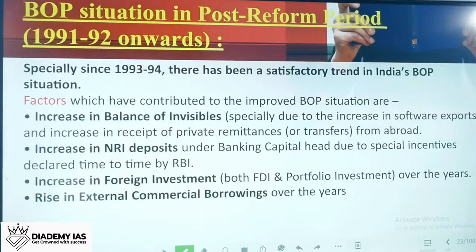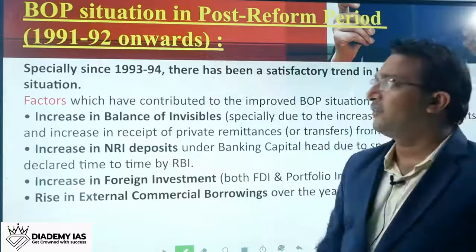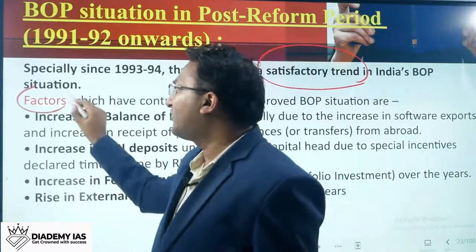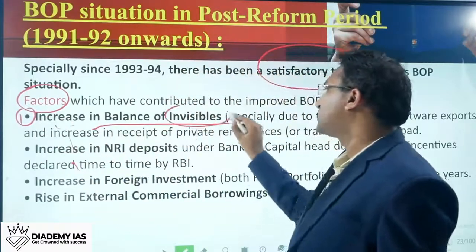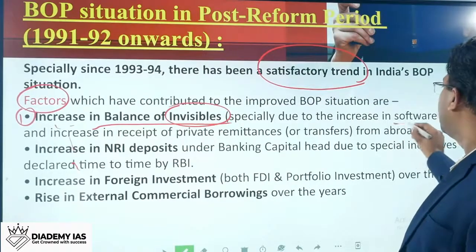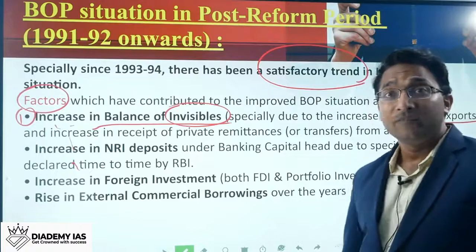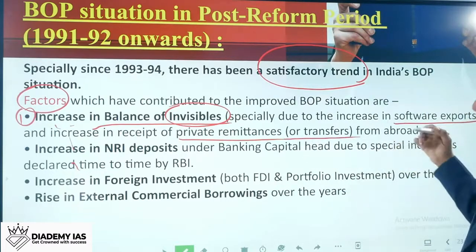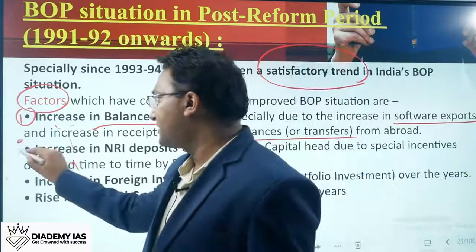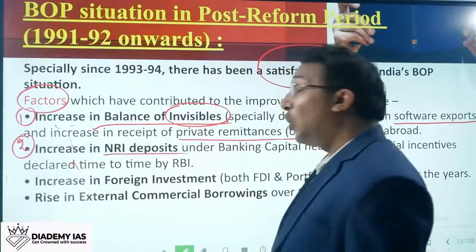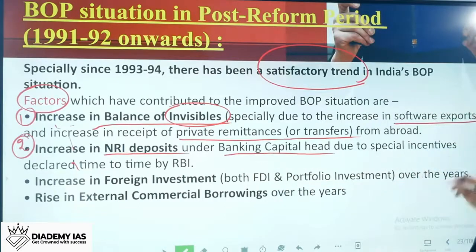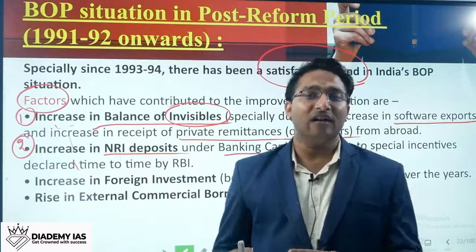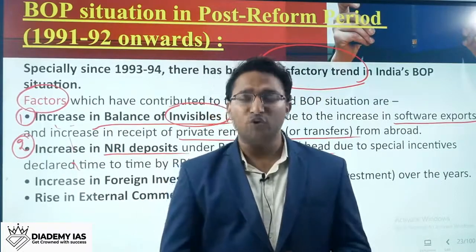In the post-reform period after 1991, there has been a satisfactory trend. The contributing factors are: first, an increase in the balance of invisibles, especially due to increase in software exports — both factor and non-factor services have seen an increase. Second, an increase in NRI deposits, as non-resident Indians are depositing amounts in the banking capital head due to special incentives declared by the RBI from time to time.